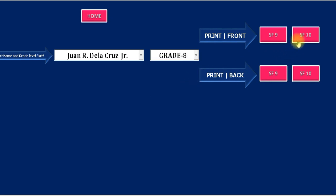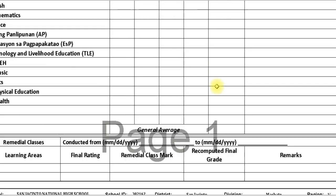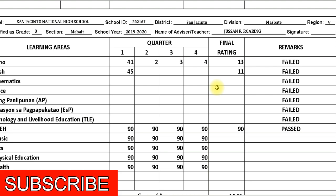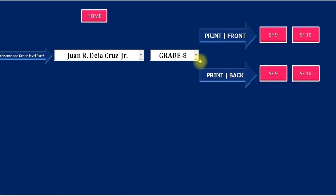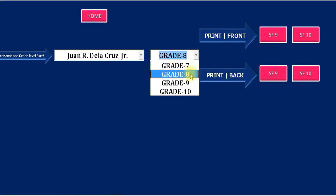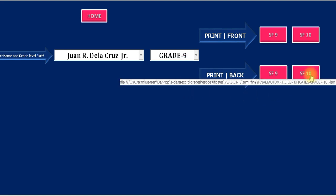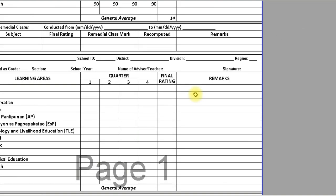Now we select Grade 8 — the Grade 7 data has been hidden, and the data visible is for Grade 8. Now we select Grade 9 — the Grade 7 and Grade 8 data has been hidden, and the data visible is for Grade 9.